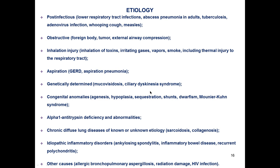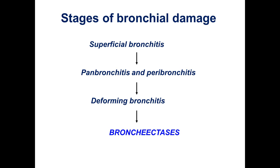A large proportion of bronchiectasis is connected with alpha-1 antitrypsin deficiency, or may develop due to chronic diffuse lung diseases such as sarcoidosis or collagenosis. Sometimes bronchiectasis may develop through unknown mechanisms — idiopathic inflammatory disorders.